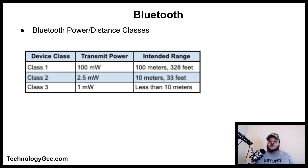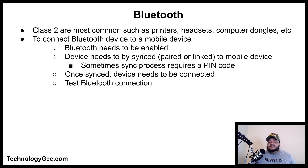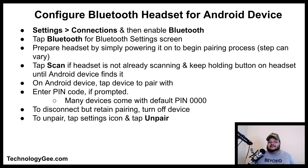The most common Bluetooth devices are Class 2 devices such as printers, headsets, and computer dongles. To connect a Bluetooth device to a mobile device, Bluetooth needs to be enabled, then the device needs to be paired or linked. Sometimes the synchronization process requires a PIN code. Once synchronized, the device needs to be connected and the Bluetooth connection should be tested.